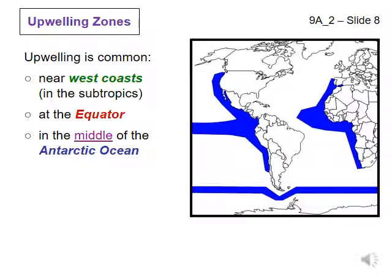Upwelling is common in many places throughout the world and occurs along most coasts at some point, often during specific seasons. Three of the most important upwelling zones are: along the west coasts of the continents on the east sides of the oceans in the subtropics; at the equator; and in the middle of the Southern Ocean, the Antarctic Ocean. In these regions, there is a lot of upwelling every year.